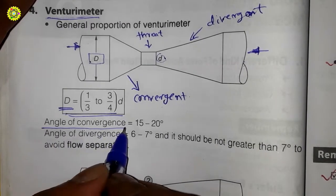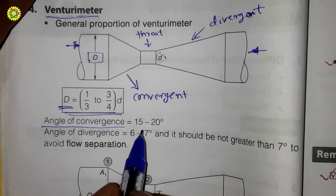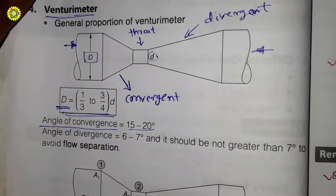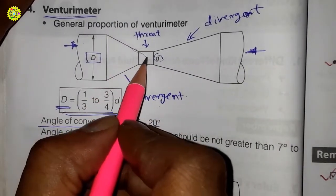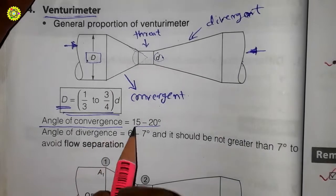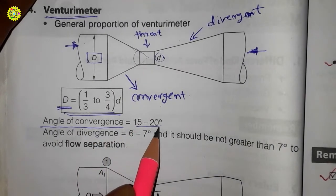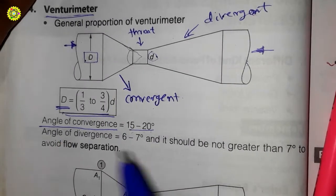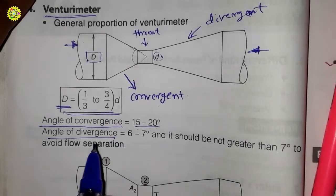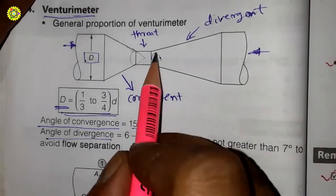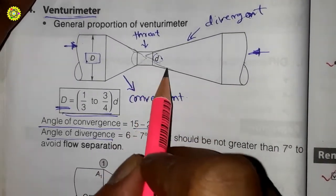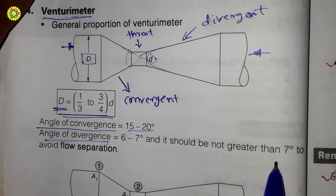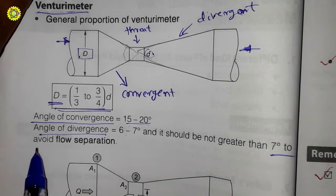The angle of convergence is 15 to 20 degrees. The angle of divergence is 6 to 7 degrees, and it should not be greater than 7 degrees to avoid flow separation.